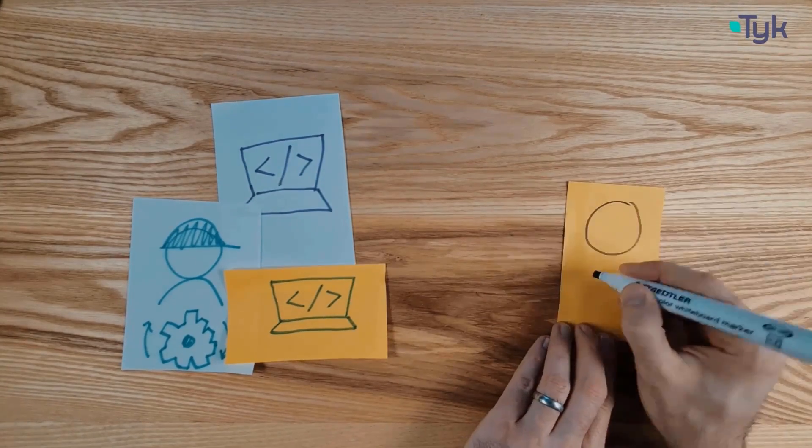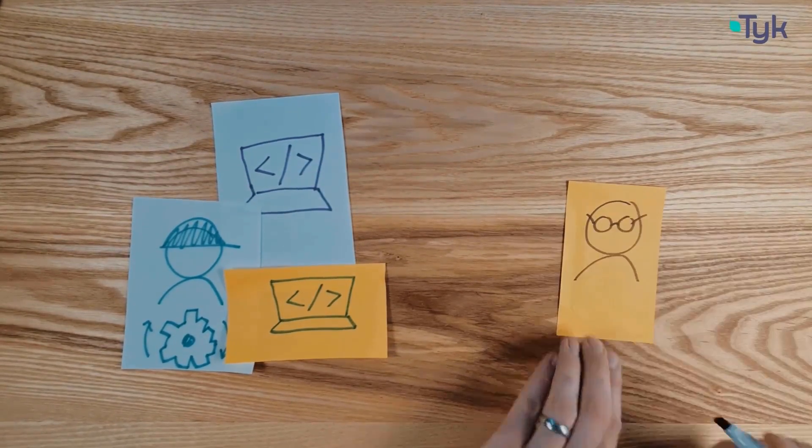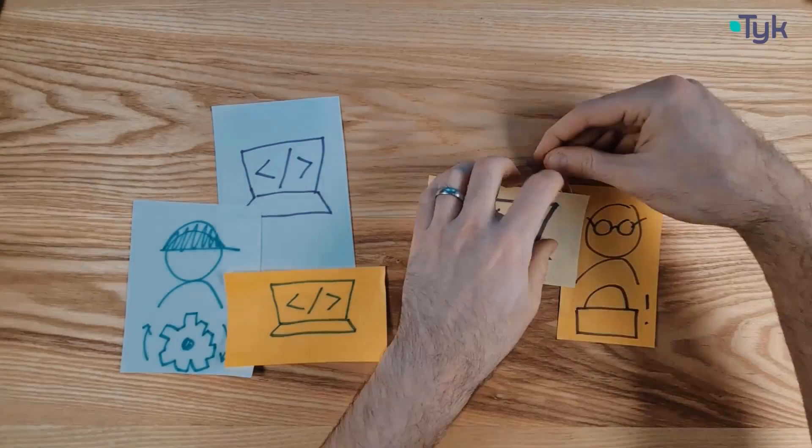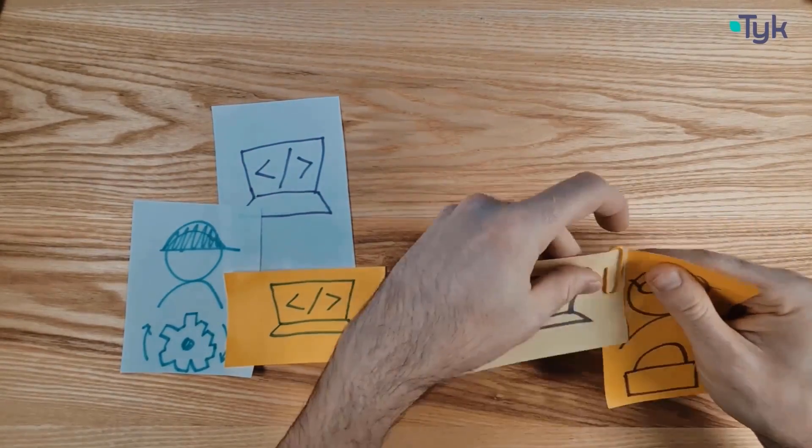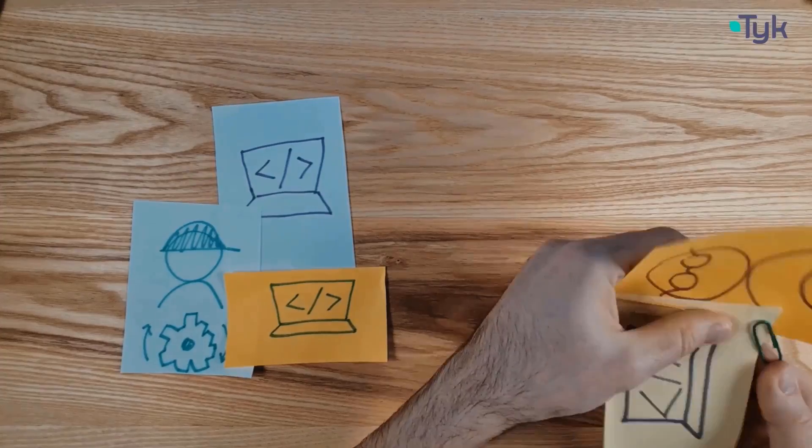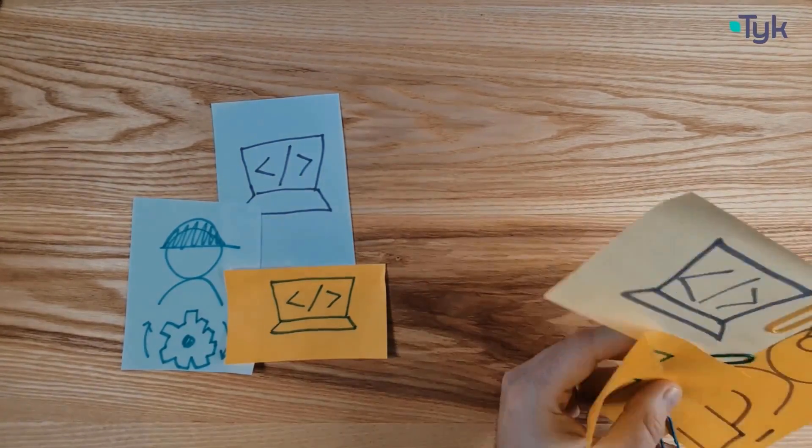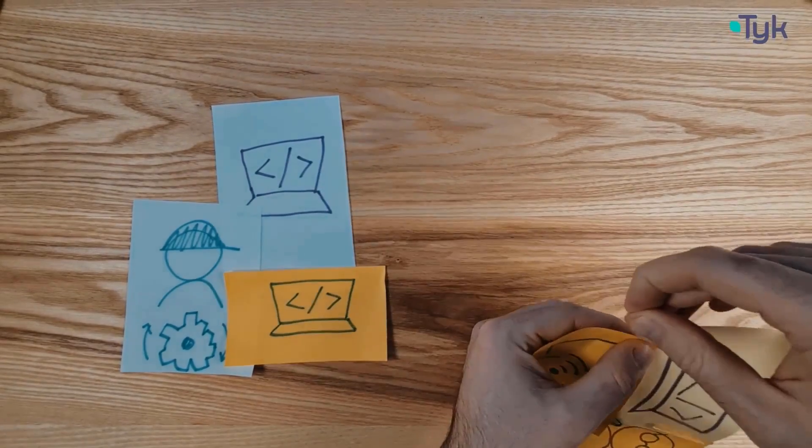Then we have Martin. He's been busy pottering away on his latest genius plan to securely expose two of the business systems to external third party consumers. Martin being Martin, this is using colorful cutting edge practices, unlike anything the company has used before.